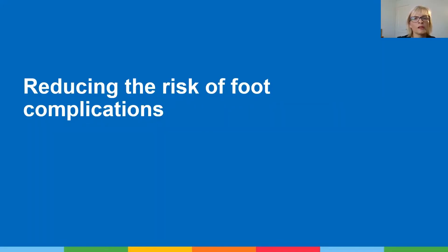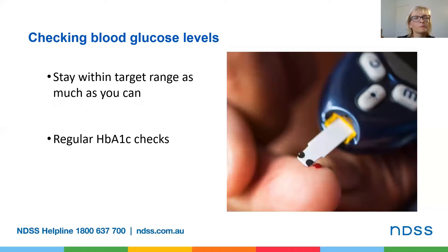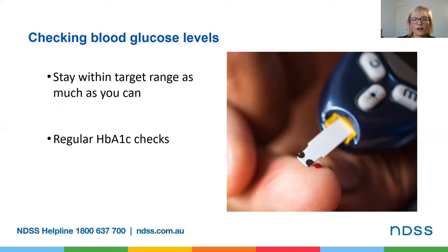Let's move on to looking at how we might be able to reduce the risk of foot complications. Firstly, checking blood glucose levels. Keeping blood glucose levels in target range as much as possible day to day, and having regular HbA1c checks, are really important things you can do to help prevent complications from developing. If blood glucose levels are elevated, the blood becomes thick like sticky toffee. As a result, blood is more likely to stick to the inside of your vessels, increasing the risk of circulation damage, which can lead to heart attacks, stroke and reduced blood flow to the feet. If you aren't sure of your target blood glucose range, check with the health professional who looks after your diabetes, as different people will have different targets based on their individual situations.